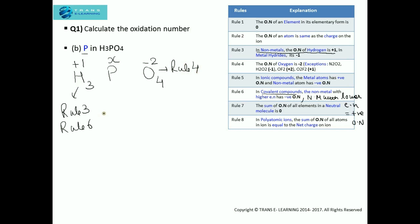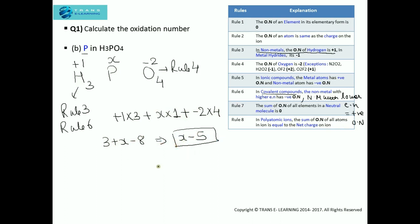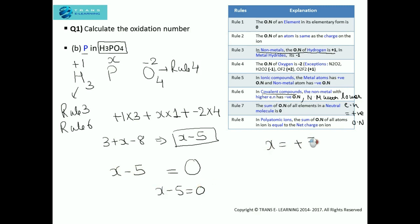Step two: write the sum of the oxidation numbers of all elements. That is: plus one into three atoms of hydrogen, plus x into one atom of phosphorus, plus minus two into four atoms of oxygen. This gives three plus x minus eight, which simplifies to x minus five. Phosphoric acid is a neutral compound, so as per step four, we set x minus five equal to zero. Solving, x equals plus five. The oxidation number of phosphorus in phosphoric acid is plus five.